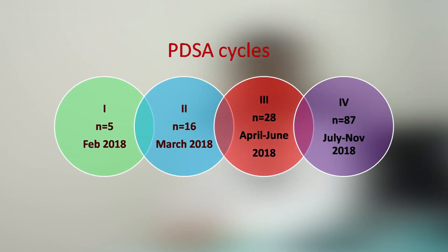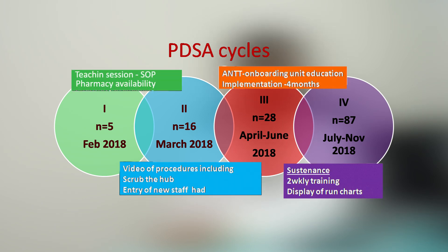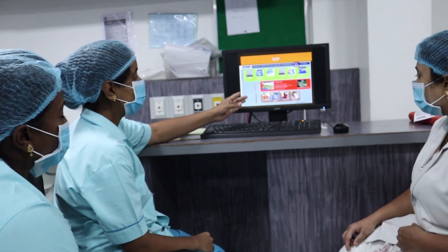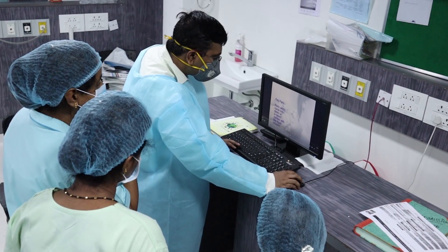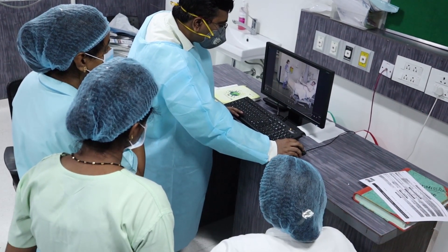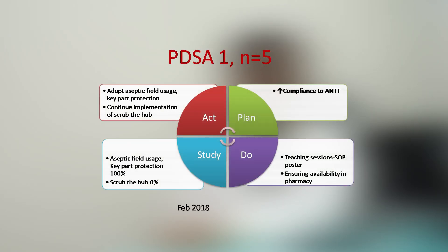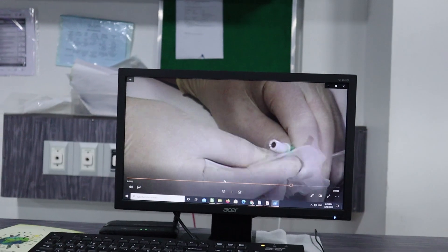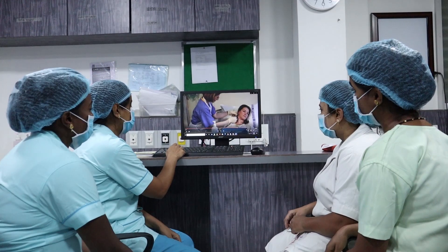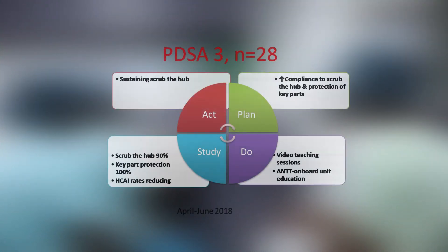The study had four PDSA cycles. The first three cycles ensured implementation while the last ensured sustenance. Implementation was ensured by teaching sessions involving SOP posters and videos of the steps including scrub the hub. We also ensured availability of items in pharmacy. In the second PDSA, we realized entry of new staff had an impact on compliance to ANTT, so we had to make ANTT part of onboarding unit education for successful implementation.